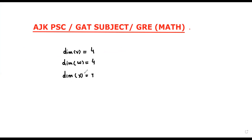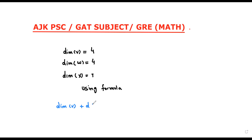If we want to find the dimension of V∩W using a formula, we write: dimension of V plus dimension of W minus dimension of V∩W is less than or equal to seven.